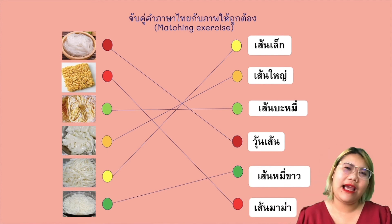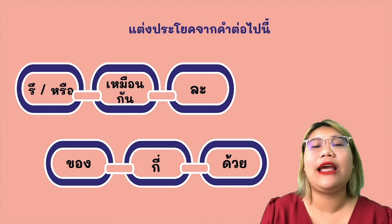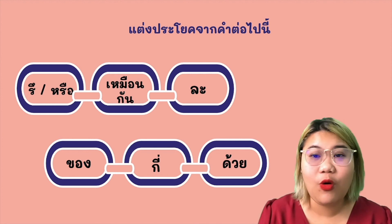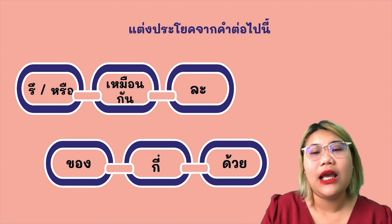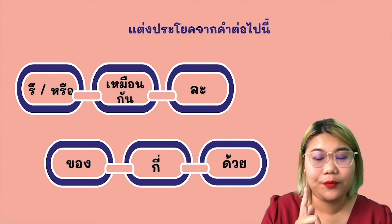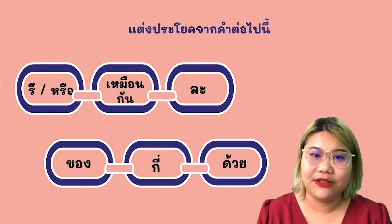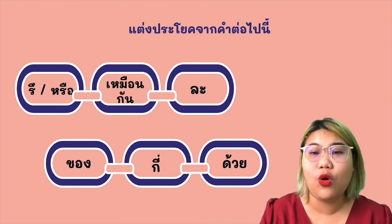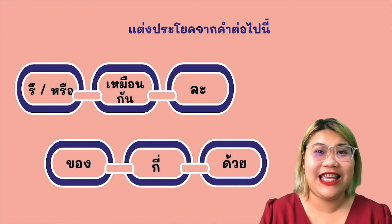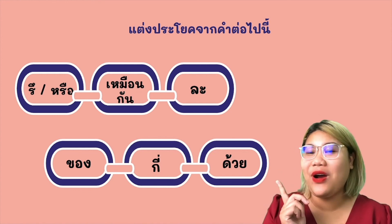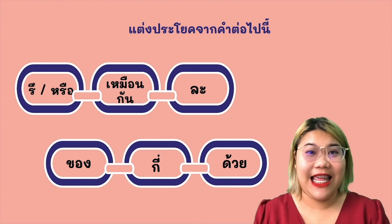And this is your homework — การบ้านนะคะ. ครูนุก gives you 6 words and would like everyone to make sentences using the following words: หรือ meaning 'or'; เหมือนกัน meaning 'as well' or 'also'; ละ which comes after the classifier; ของ meaning 'belong to' or 'of'; กี่ meaning 'how many'; and ด้วย meaning 'also,' 'too,' or 'as well,' placed at the end of the sentence.